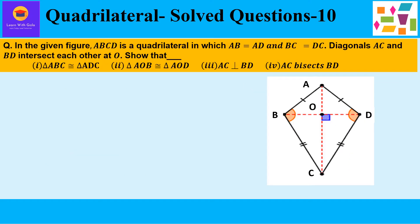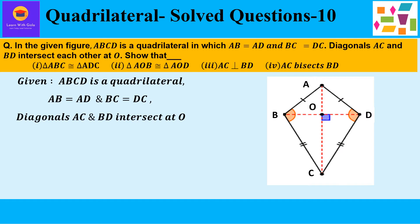First of all, let us see what is given to us in this question. ABCD is a quadrilateral in which AB is equal to AD and BC is equal to DC. As you can see in the figure, AB and AD are two adjacent sides and they are equal to each other. Similarly, BC and DC are two adjacent sides which are also equal to each other. Further, diagonals AC and BD intersect at O, which is the point of intersection between AC and BD.